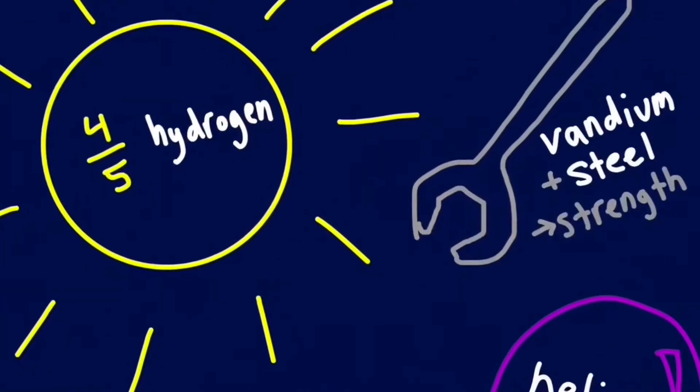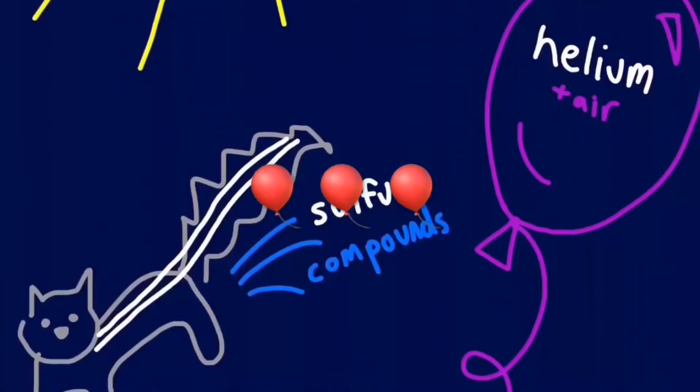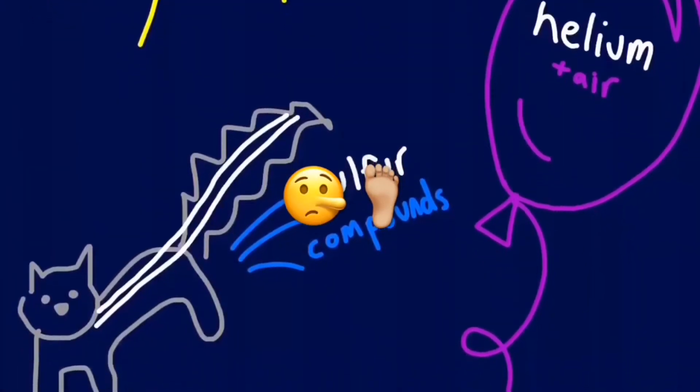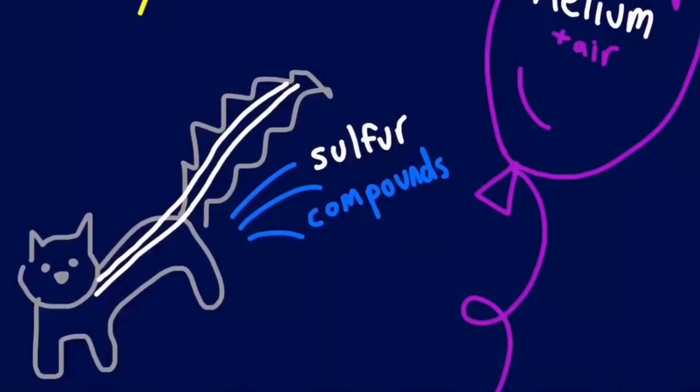The sun is four-fifths hydrogen. Vanadium and steel are what make your tools strong. Helium makes your balloons float. Sulfur is what makes skunks stink. But what are all these words? Hydrogen, helium, sulfur. They're elements.